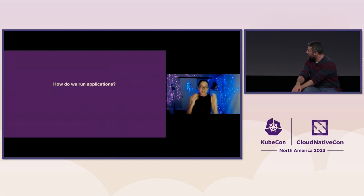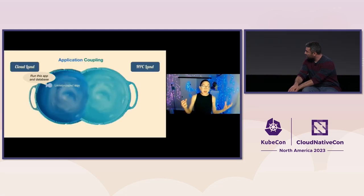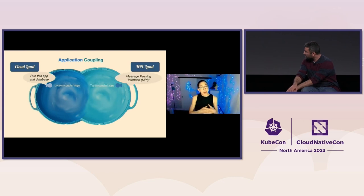Our next logical question was: okay, we have a workload manager — now how do we run applications? We looked at how cloud and HPC apps are actually different. First, application coupling: in cloud we have very loosely coupled apps, in HPC we have very tightly coupled apps. For resource scheduling in cloud, we may want to run a pod with a certain amount of CPU, but in HPC we're scheduling hardware down to the PCI bus.